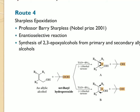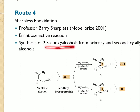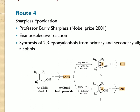An important way to synthesize epoxides is through Sharpless epoxidation, which is an enantioselective reaction. This reaction was developed by Barry Sharpless, who was awarded the Nobel Prize in 2001 for his exemplary work on the enantioselective synthesis of 2,3-epoxy alcohols from primary and secondary allylic alcohols. The reagents used are tertiary butyl hydroperoxide, which acts as the oxidizing agent and must be present in molar amounts, titanium tetra-isopropoxide, and diethyl tartrate.